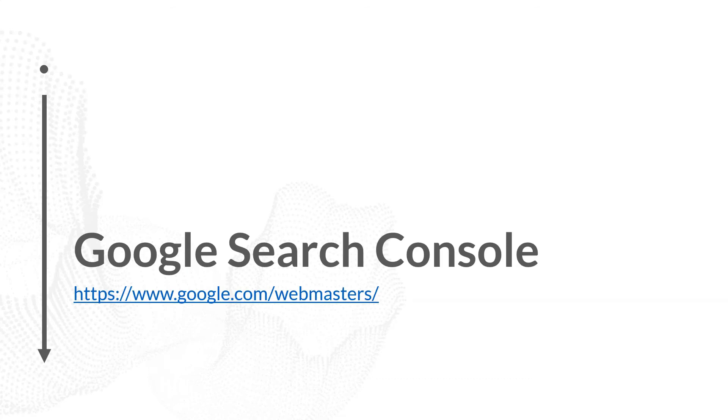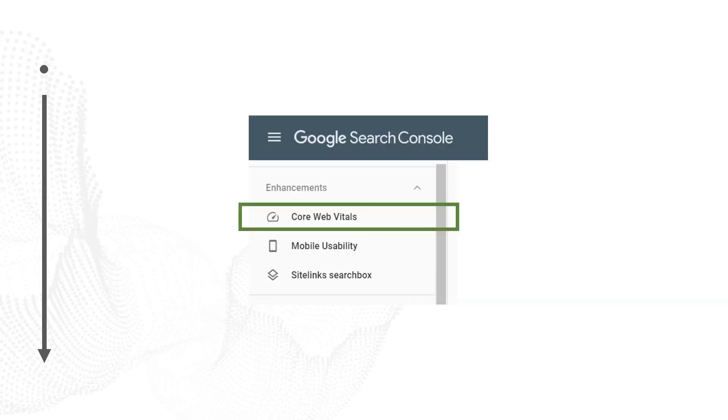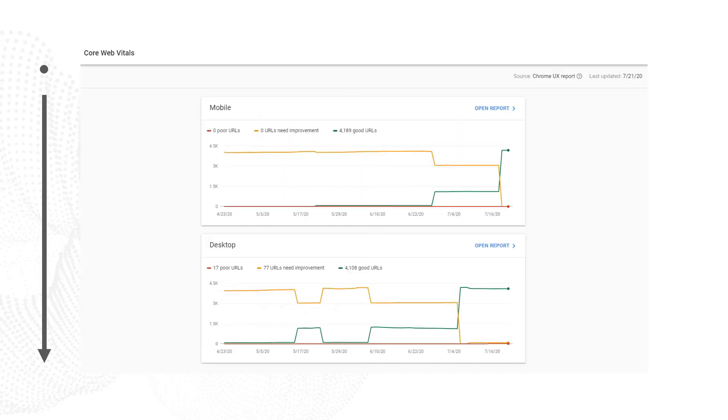Connected with PageSpeed Insights is Google Search Console — a free tool that gives you all kinds of information about your website's performance, including information about those core web vitals. When you go to google.com/webmasters and open up your website, you can click on Core Web Vitals in the sidebar. When you do, you'll be taken to the Core Web Vitals dashboard, which tells you how your pages have been trending over time in terms of those core web vital metrics.